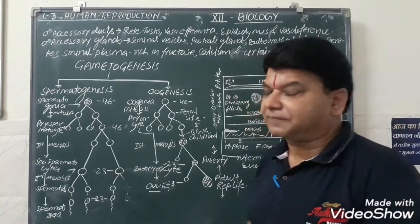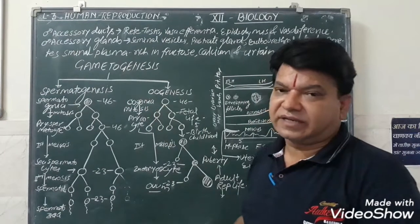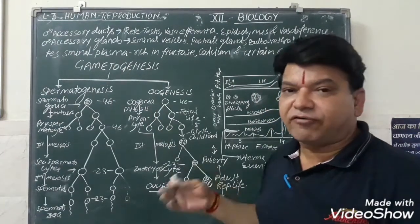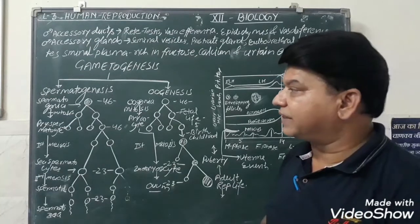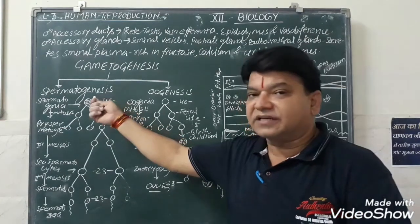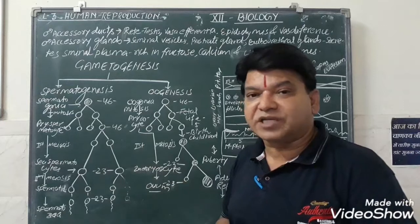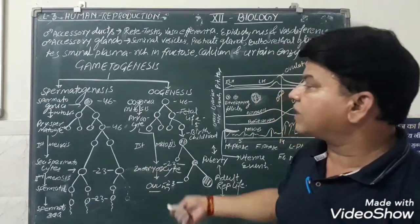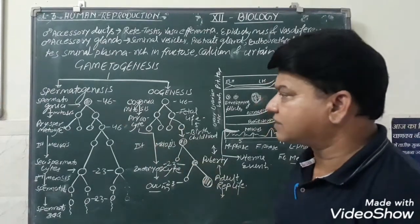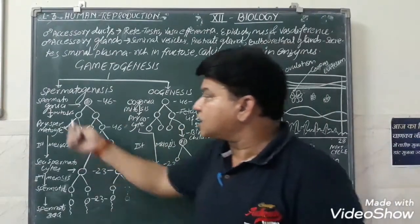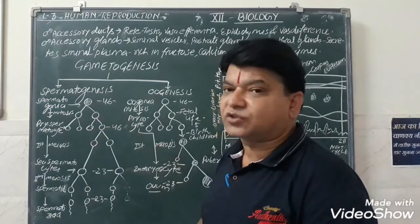Now let us go through gametogenesis. Gametogenesis means the formation of gametes. The formation of gametes in males is known as spermatogenesis, that is the formation of sperms, and in females it is known as oogenesis. Let us go through spermatogenesis first. The spermatogonia are formed inside the seminiferous tubules in the human testes.